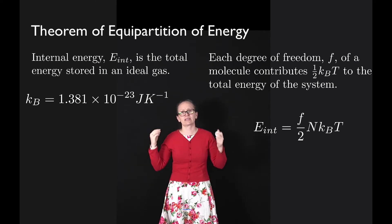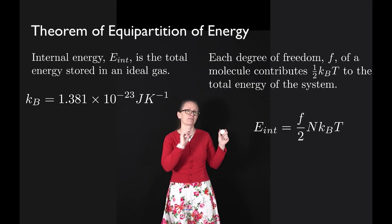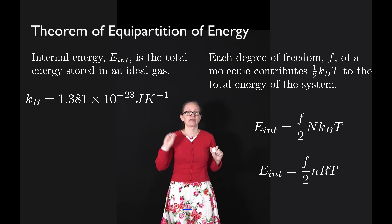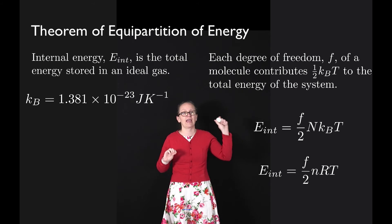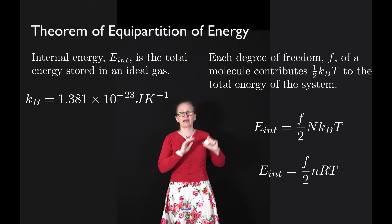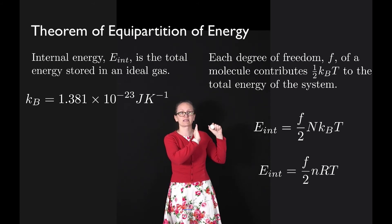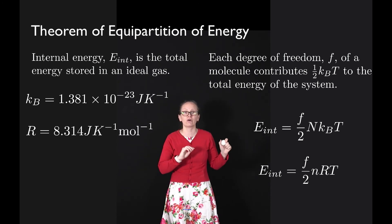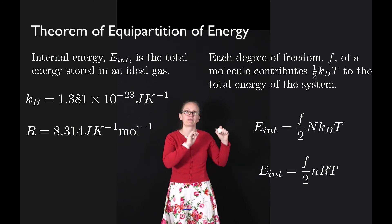Now if rather than knowing the number of molecules we know the number of moles, you can use an alternate form of this equation which can be written as E_int equals f over 2 n R T, where lowercase n represents the number of moles and R is the gas constant which is equal to 8.314 joules per Kelvin per mole.